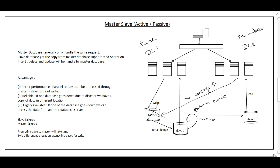So there are two disadvantages: first, promoting a slave to master takes time and there could be data loss during that period; second, if write requests come from a geolocation that does not have a master — such as Mumbai sending writes to Pune — latency increases. These problems are solved by master-master or active-active architecture.